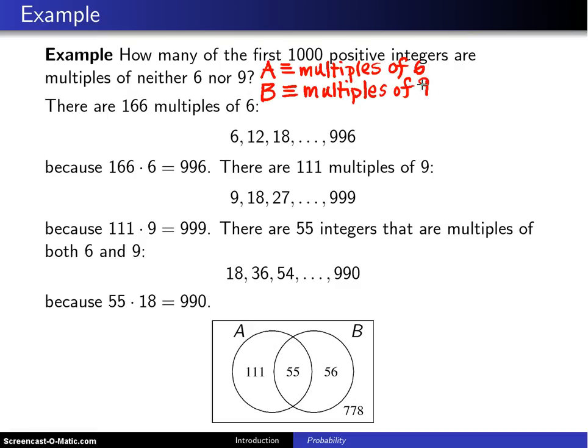Well, the number of multiples between 1 and 1,000 of 6 are going to be 6, 12, 18, 24, etc., all the way up to 996, and there are going to be 166 such multiples because 166 times 6 equals 996. Another way of writing that is N of A, where N is the number of elements in the set A. N of A, in this case, is 166.